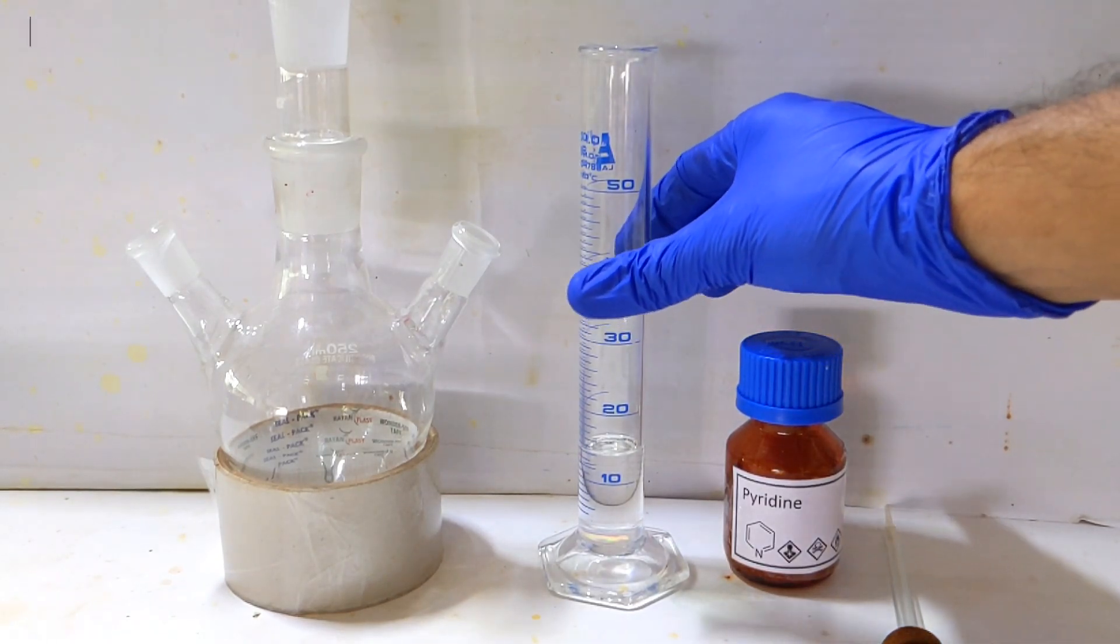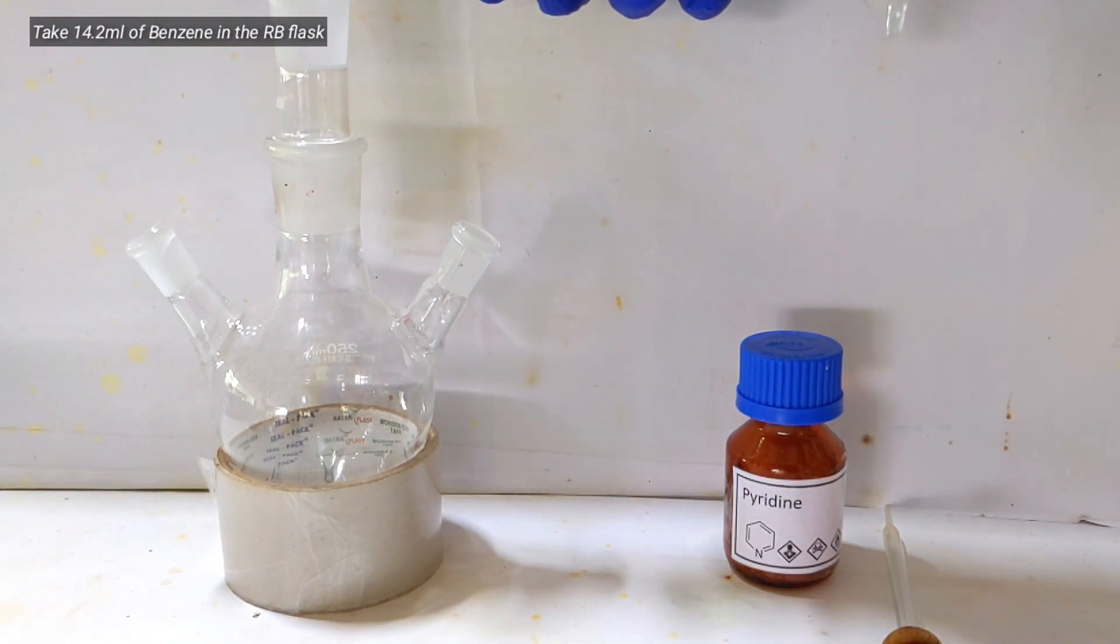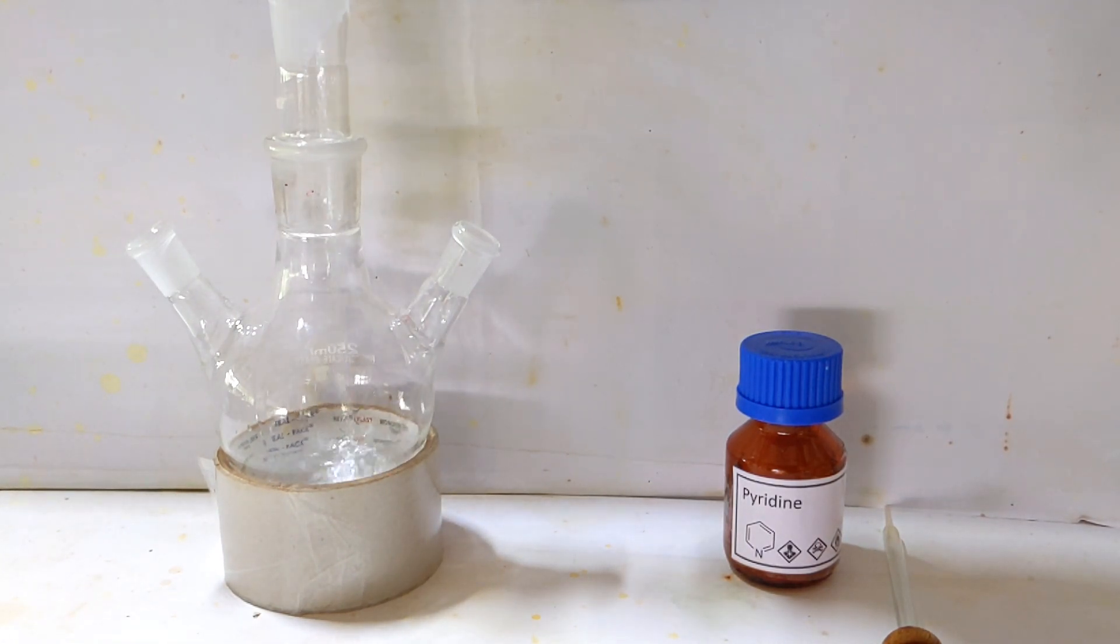Start by taking a 250 ml round bottom flask and pour 14.2 ml of benzene into it. I am using a 3-neck round bottom flask for convenience in the next step where I add the bromine.